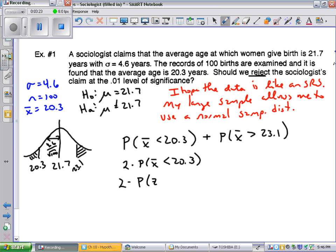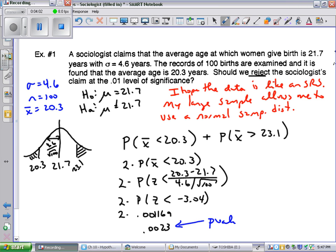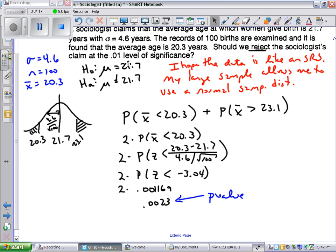Since those regions are the same, this is essentially two times getting an x-bar less than 20.3. So now I'll standardize this, and hopefully this process that I'm doing now, the mathematics, is familiar enough to you where you're fairly speedy at it. Type this into your calculator. You're going to get negative 3.04. You can trust me now, but you should verify later, as President Reagan used to say, trust but verify. And that area right there is 0.001169. So when I double that, I get 0.0023. That value right there is called a p-value.